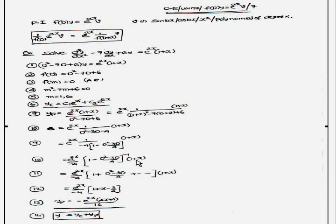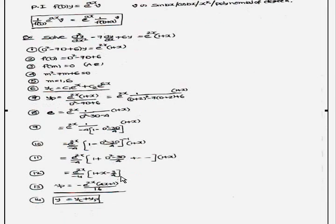So if you observe this one, first differentiation of this function is 1, second differentiation is 0. That means second differentiation onwards you can neglect the terms. So if you do like that and simplify the problem, you will get (1+x - 3/4).